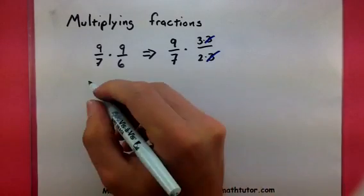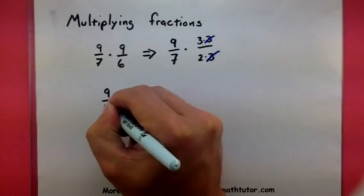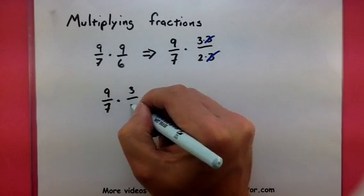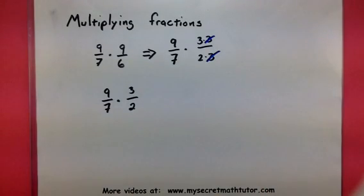Now, that changes this problem into 9 sevenths multiplied by 3 halves. And that really just makes our numbers a little bit smaller and a little bit more manageable.